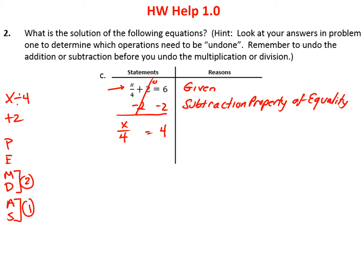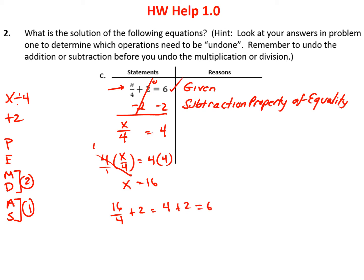Now undo divide by 4: the opposite of dividing by 4 is multiplying by 4. So I multiply both sides by 4. Notice 4 divided by 4 is 1, so I end up with x equals 4 times 4 equals 16. Let's check: 16 divided by 4 plus 2 — 16 divided by 4 is 4, and 4 plus 2 is 6, which is the answer. We did that problem correctly.